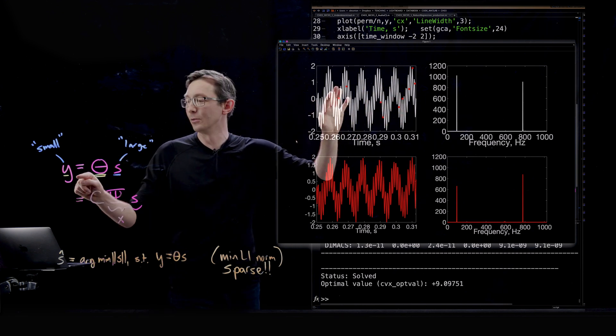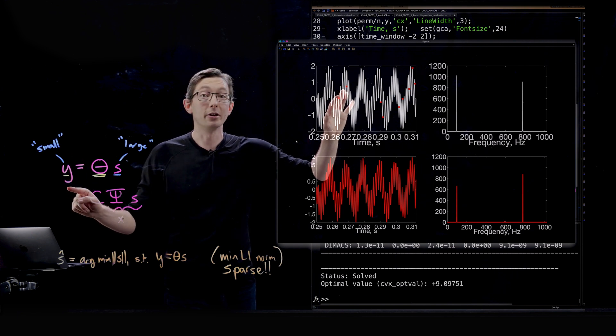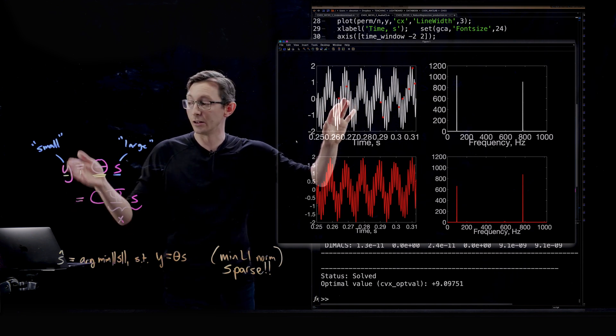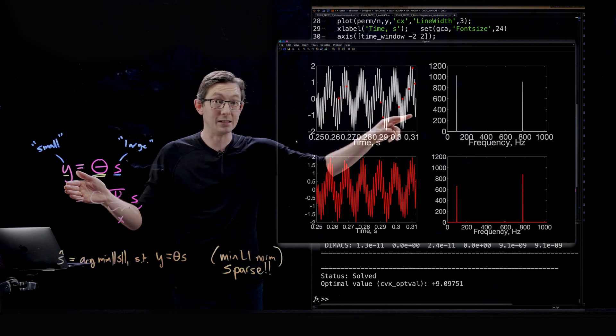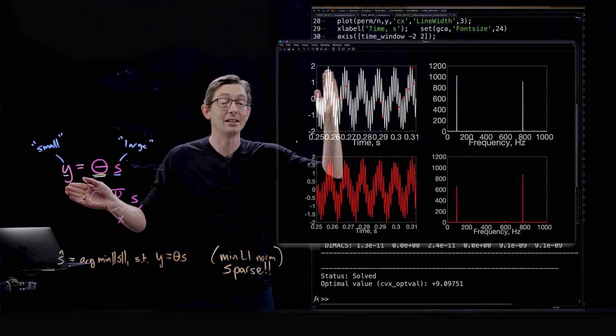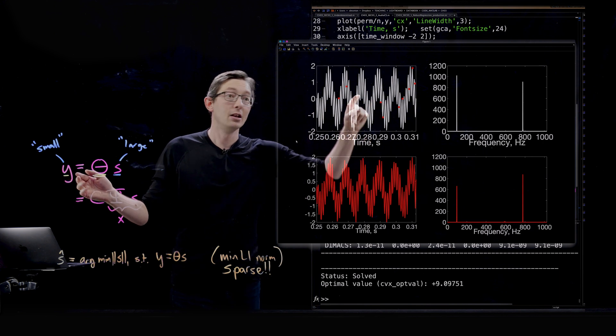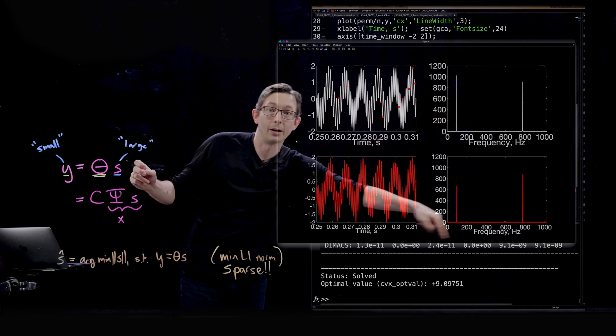I want to show you now that if you naively downsampled this uniformly, so if we just did a uniform downsampling and didn't space these randomly in time but spaced them evenly in time but at a much coarser rate, you would not at all recover the right solution.